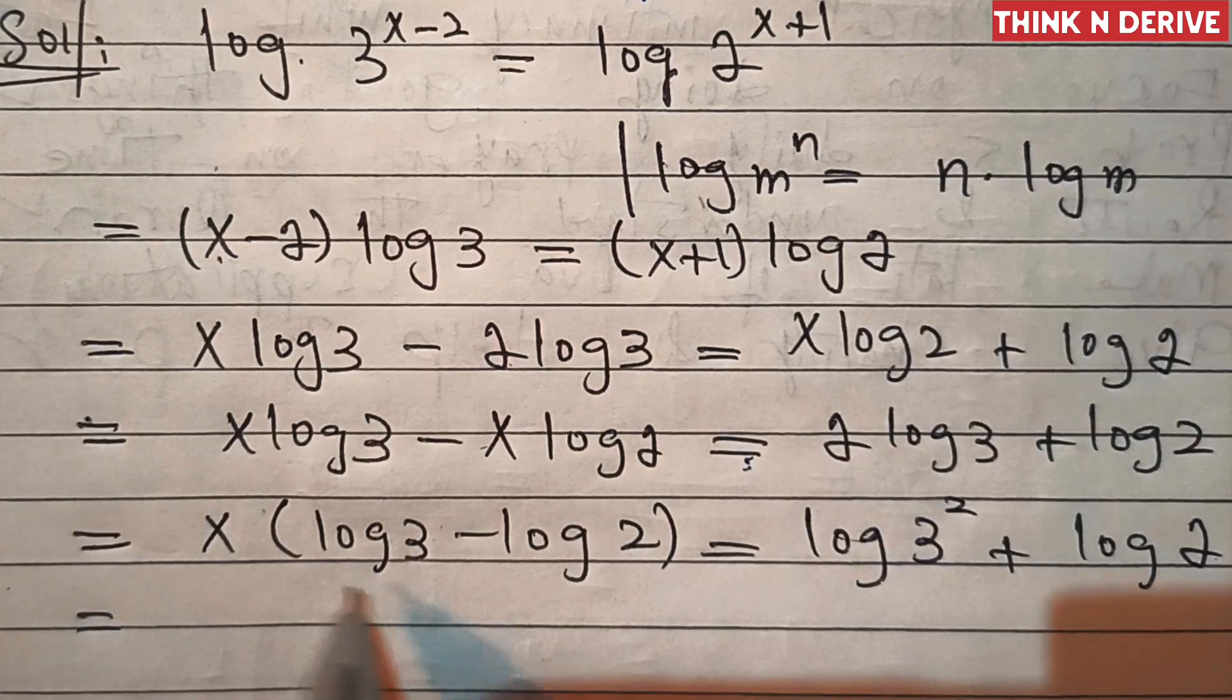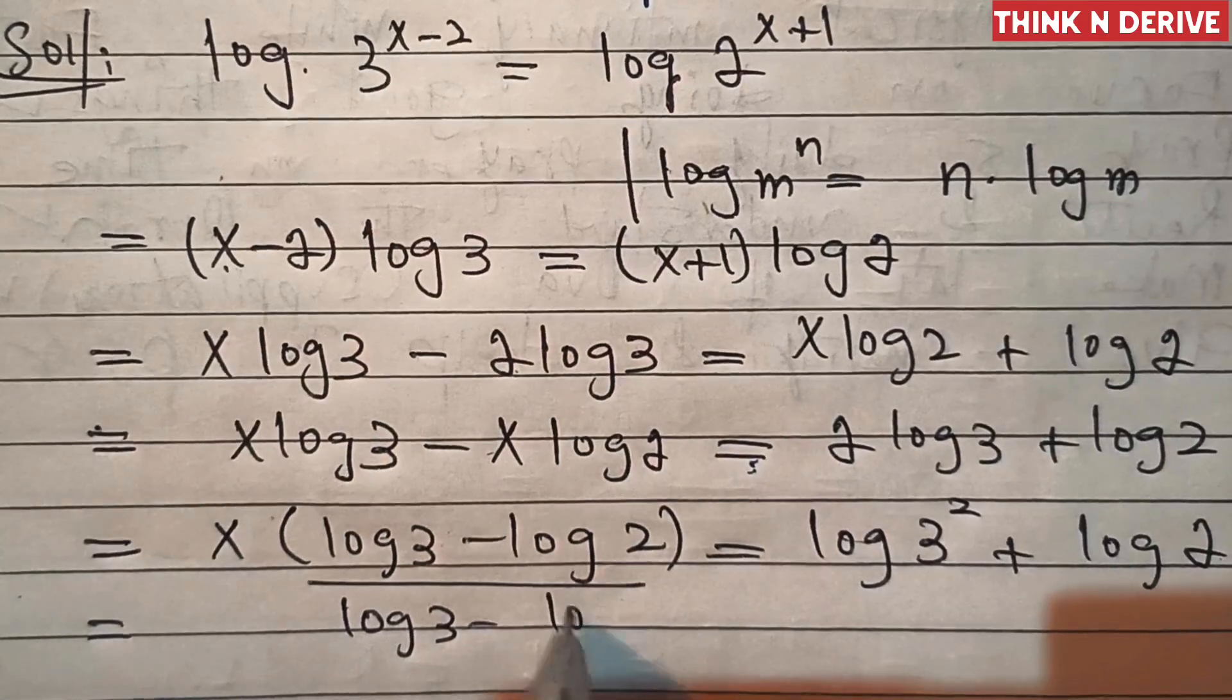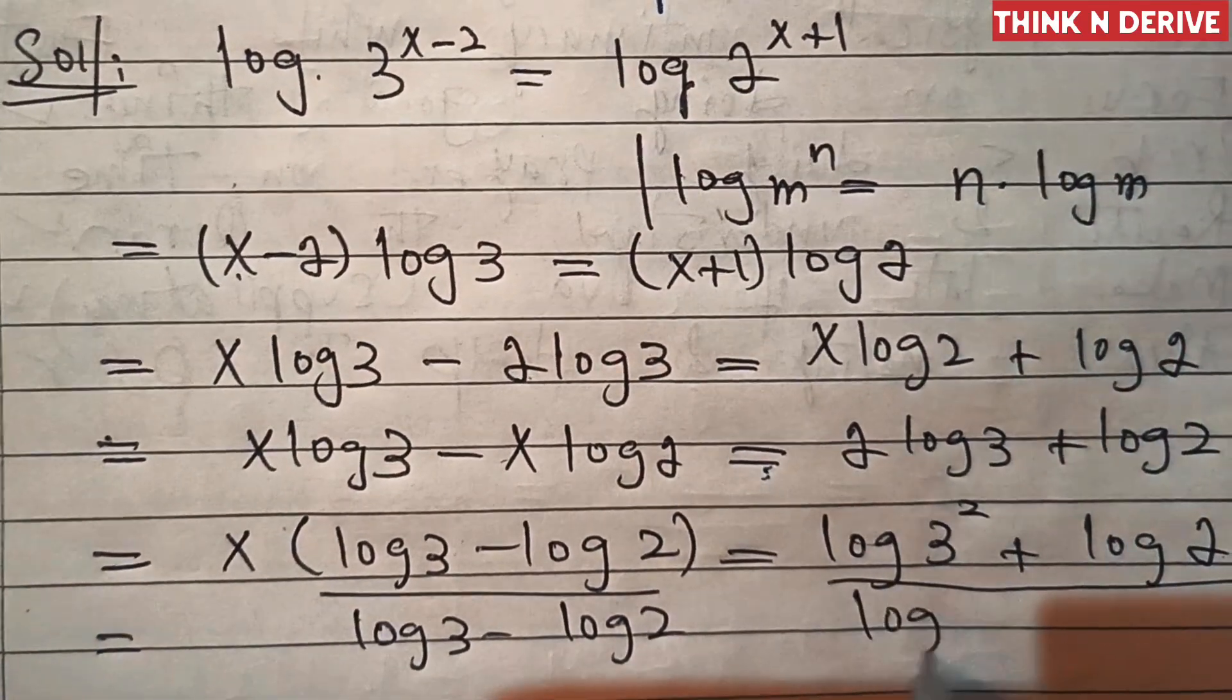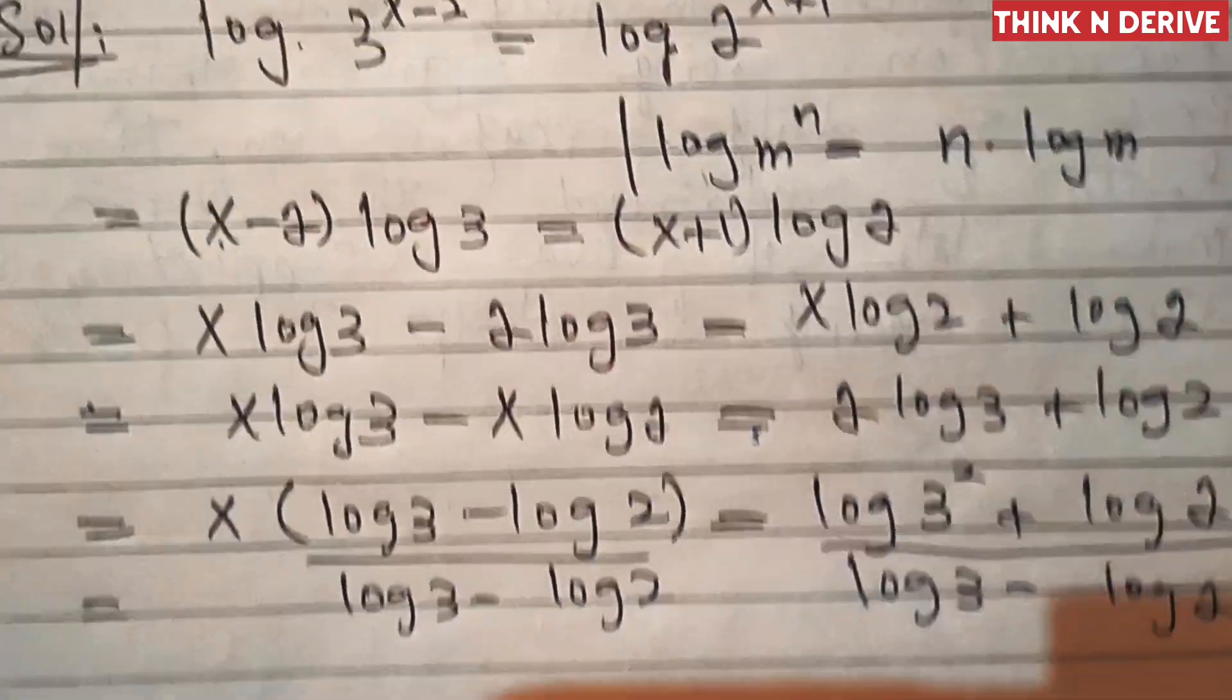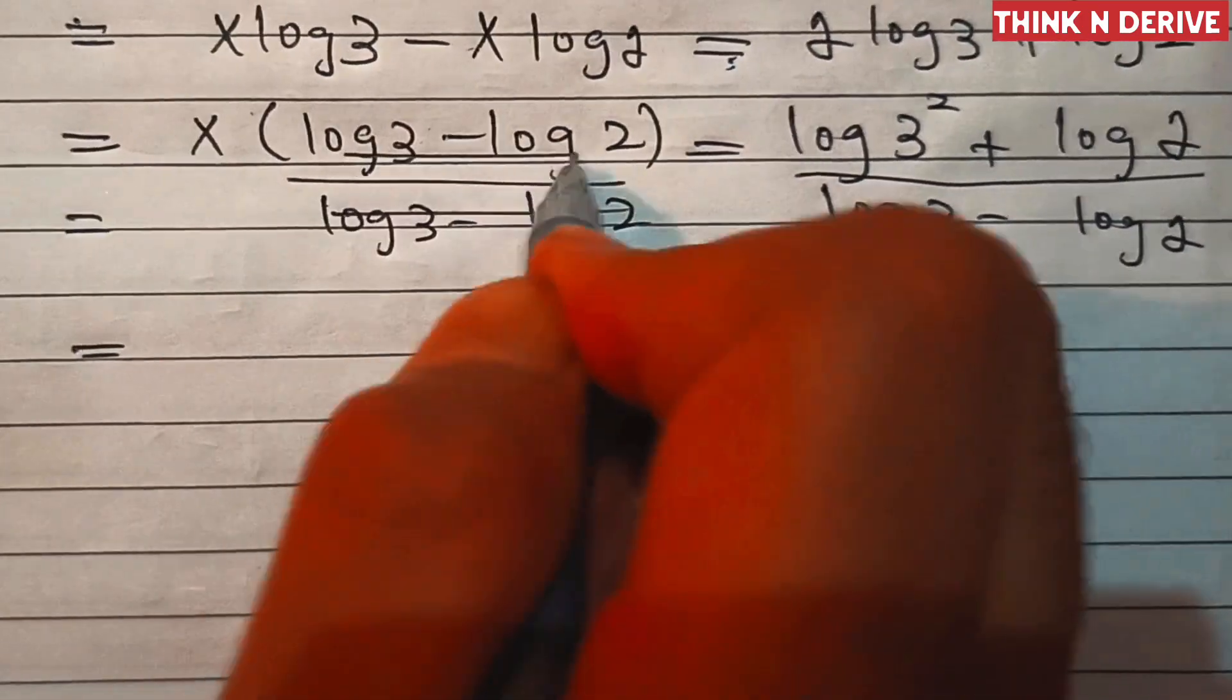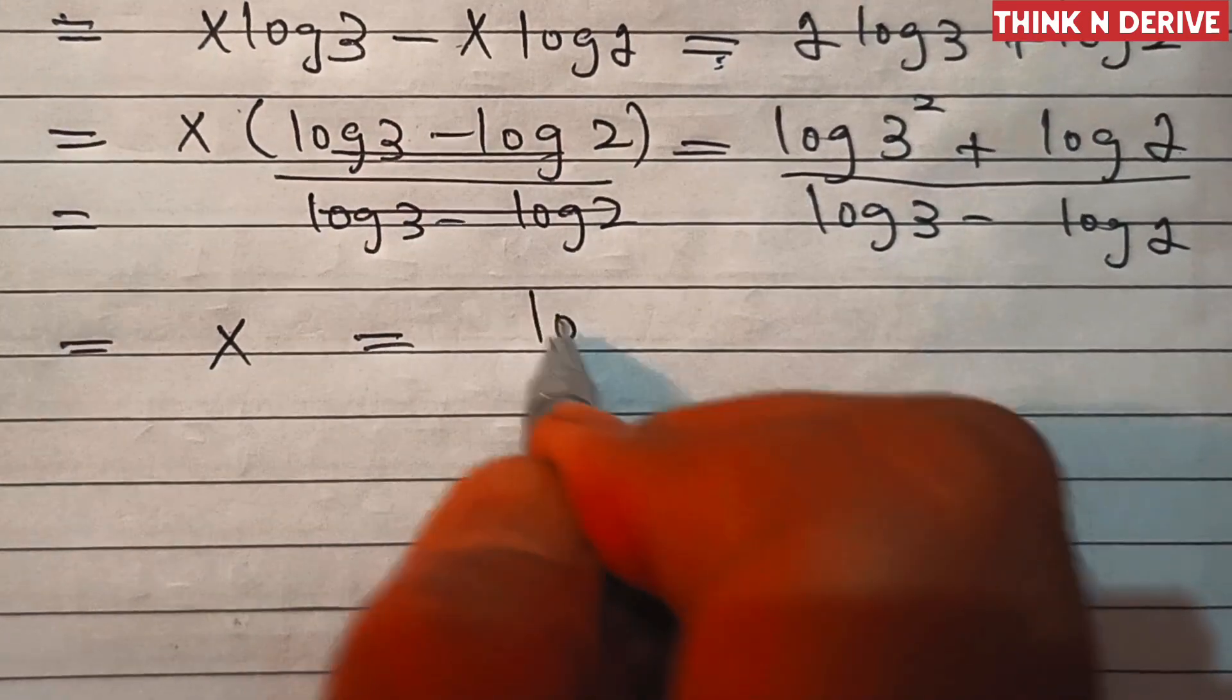So this is equal to, now we'll divide both sides by log 3 minus log 2. This and this will get cancelled out, so here remains x equal to log of 3 square is log of 9 plus log of 2.